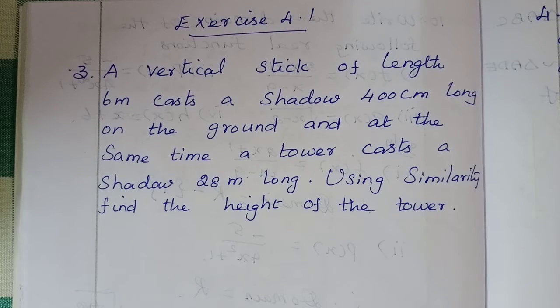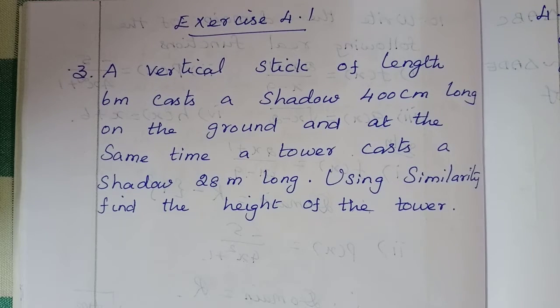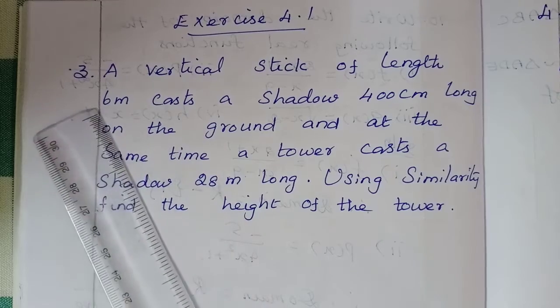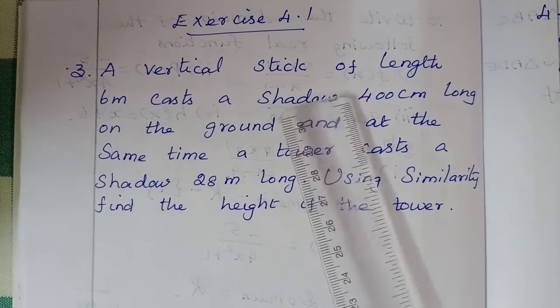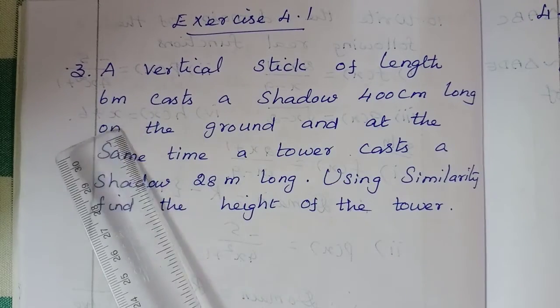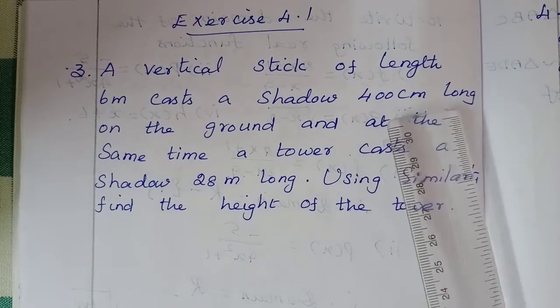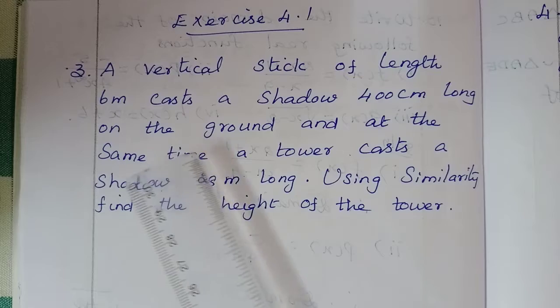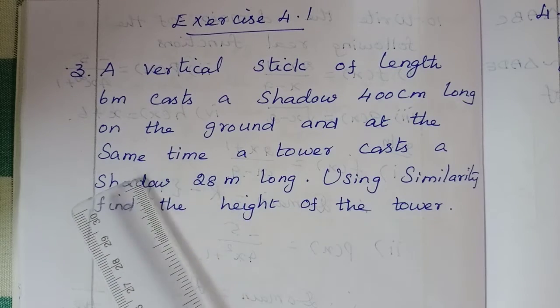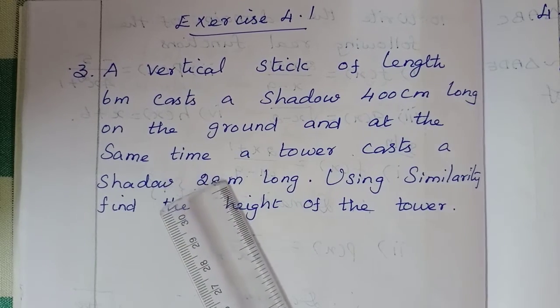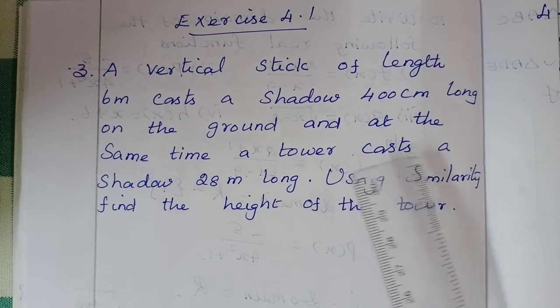Hello students, welcome to Max Class. In this video, Exercise 4.1, third problem. A vertical stick of length 6 meter casts a shadow 400 centimeter long on the ground, and at the same time a tower casts a shadow...